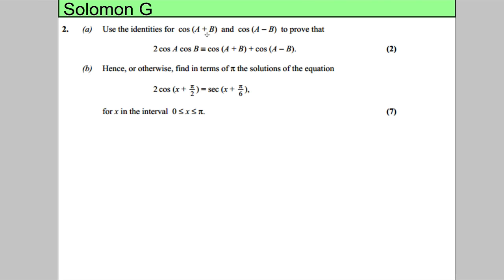In this question we're asked to use the identities for cos A plus B and cos A subtract B to prove that the following is true. Well, the formula booklet gives us the following. The formula booklet tells us